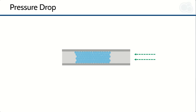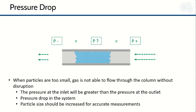If we decrease our particle size, there is less interstitial space between each particle, and we will have problems with our flow. When particles are too small, gas is not able to flow through the column without disruption. The pressure at the inlet will rise and will be greater than the pressure at the outlet — this is why it's called pressure drop. The pressure somewhere between the inlet and outlet is unknown; we may have one area that is particularly densely packed leading to the majority of the pressure drop, which is very difficult to determine — and is why it is advised to limit pressure drop as much as possible.